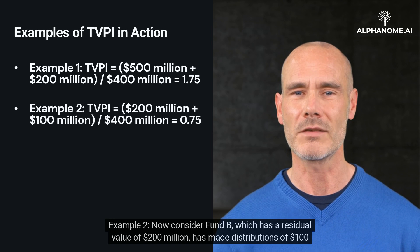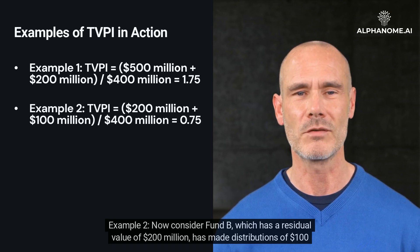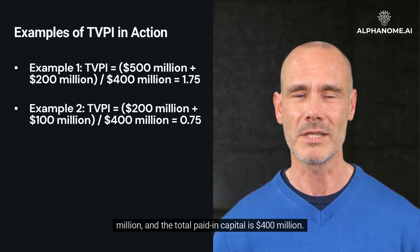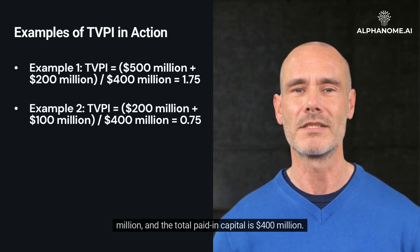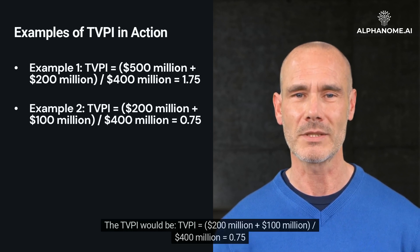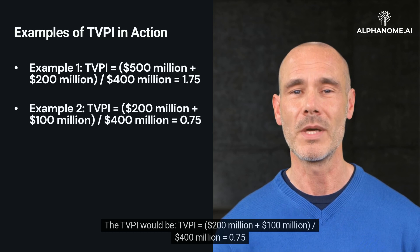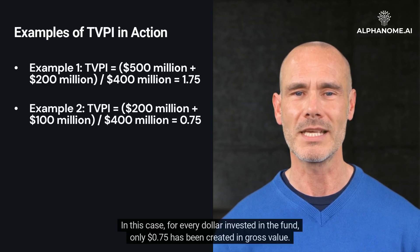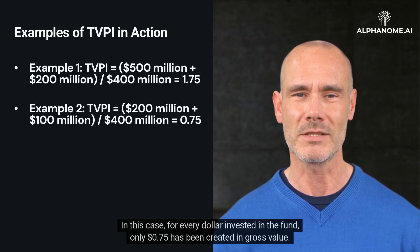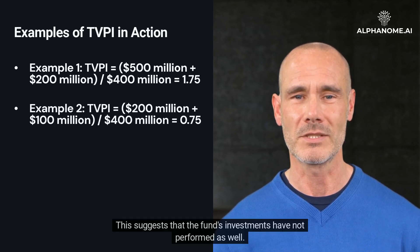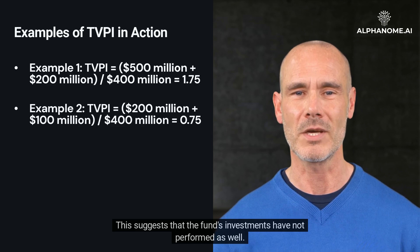Example 2: Now consider Fund B, which has a residual value of $200 million, has made distributions of $100 million, and the total paid-in capital is $400 million. The TVPI would be: TVPI equals $200 million plus $100 million, divided by $400 million, equals 0.75. In this case, for every dollar invested in the fund, only $0.75 has been created in gross value. This suggests that the fund's investments have not performed as well.